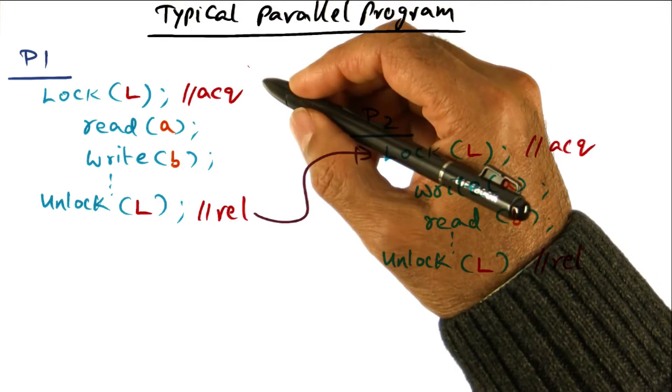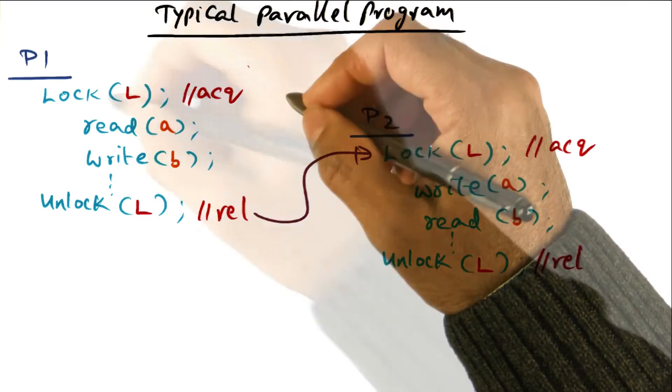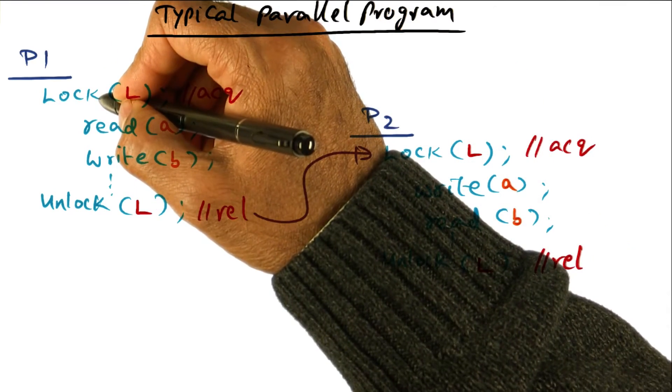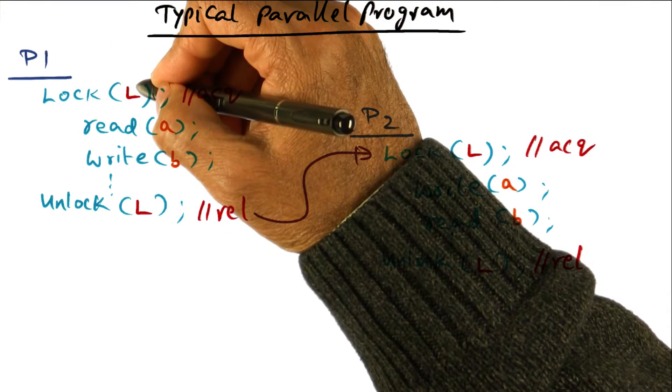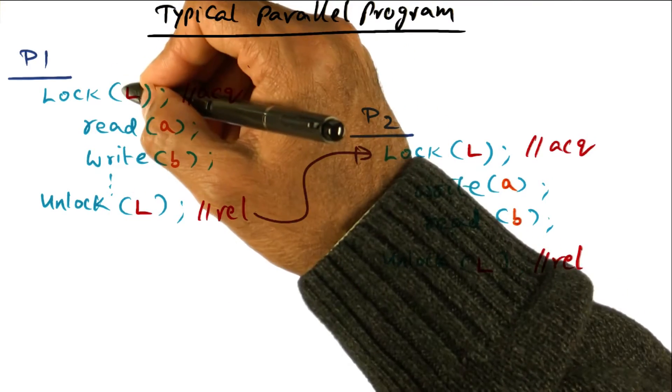Now let's see what happens in a typical parallel program. In a typical parallel program that you might write, you probably get a lock, and you have mentally an association between that lock and the data structures that are governed by that lock.